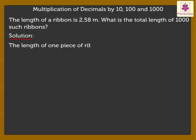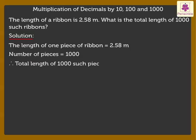The length of one piece of ribbon is equal to 2.58 meters. Number of such pieces is equal to 1000. Therefore, total length of 1000 such pieces is equal to 2.58 into 1000.